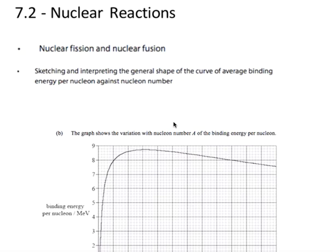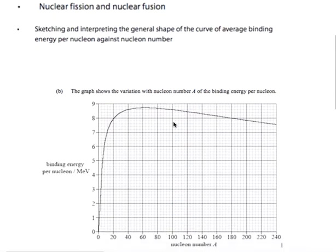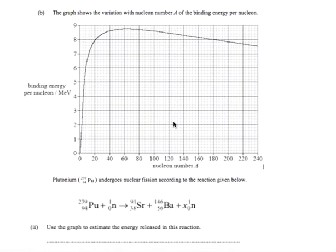Here with another question bank question in topic 7.2, we're looking at the binding energy per nucleon chart. On the x-axis is the nucleon number of all the atoms, and on the y-axis we have the binding energy per nucleon in MeV.